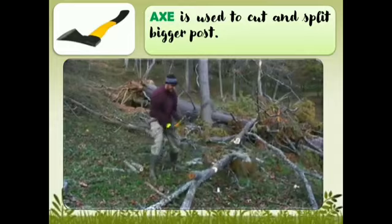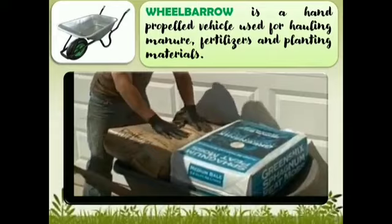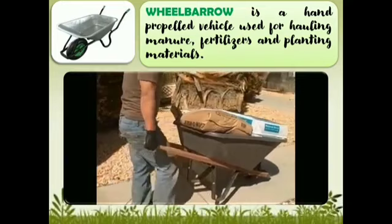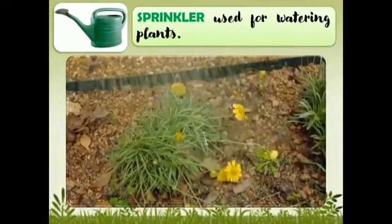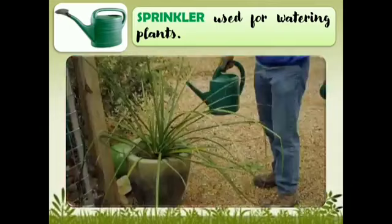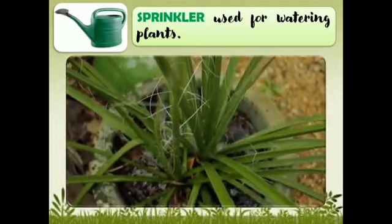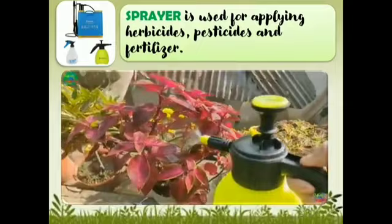Wheelbarrow. It is a hand-propelled vehicle used for holding manure, fertilizers, and planting materials. Sprinkler. It is used for watering plants. Sprayer. It is used for applying herbicide, pesticide, and fertilizer.